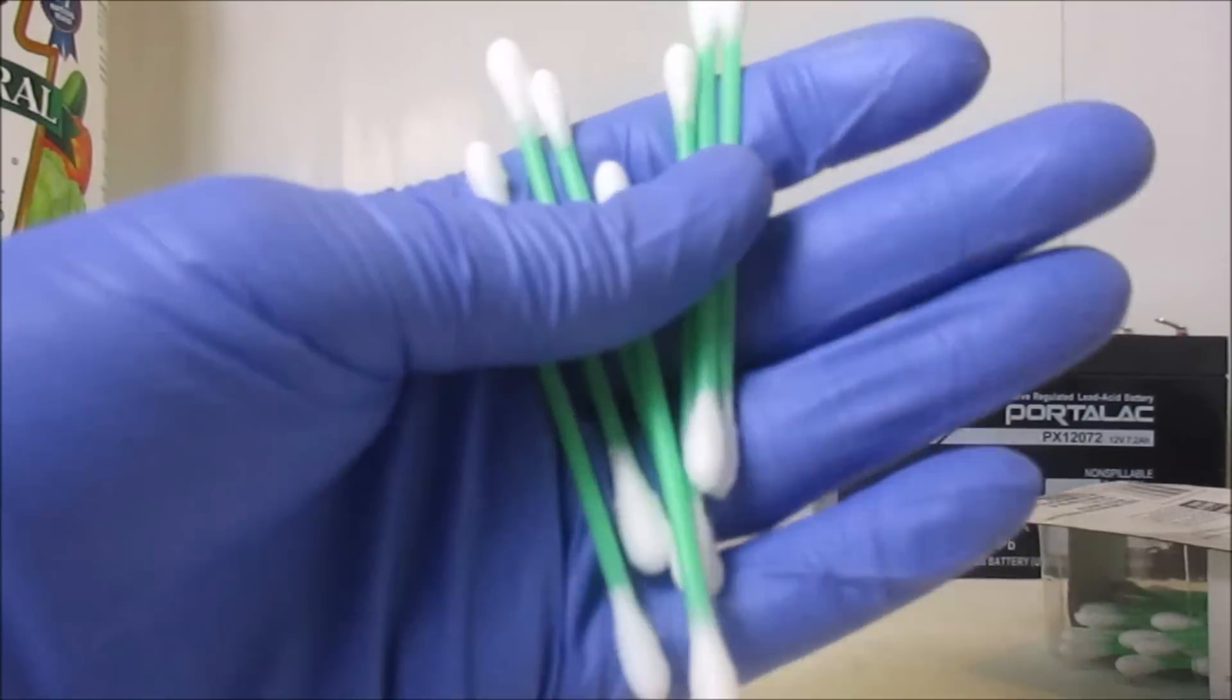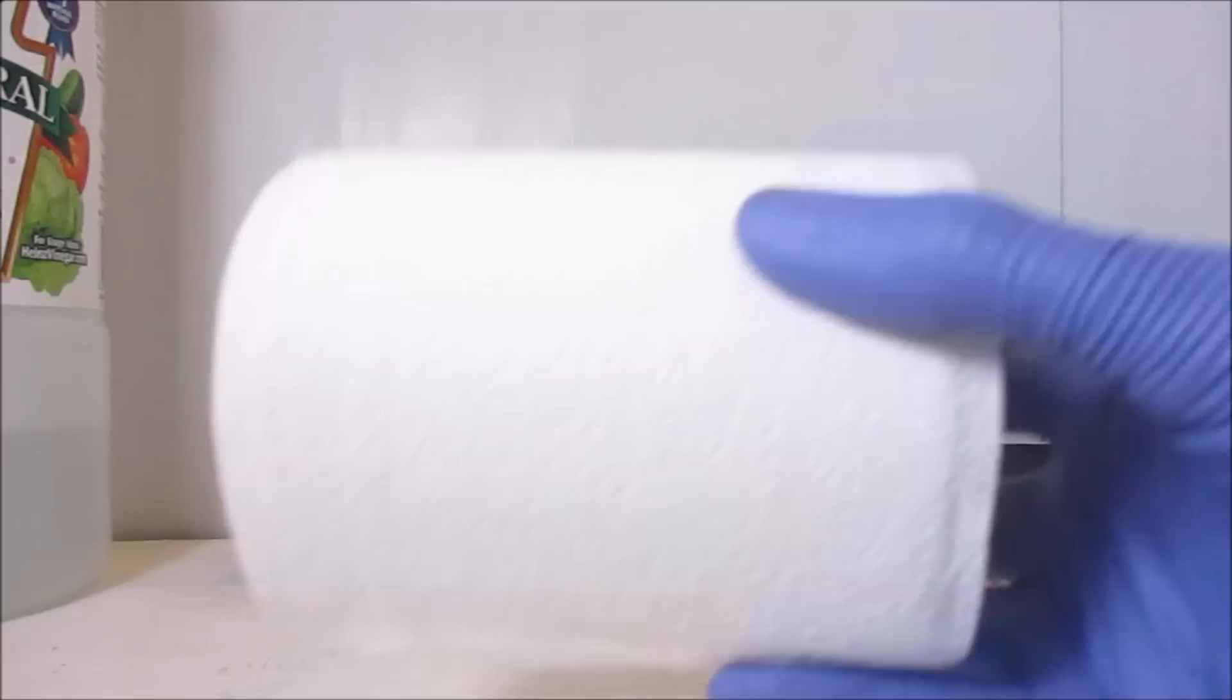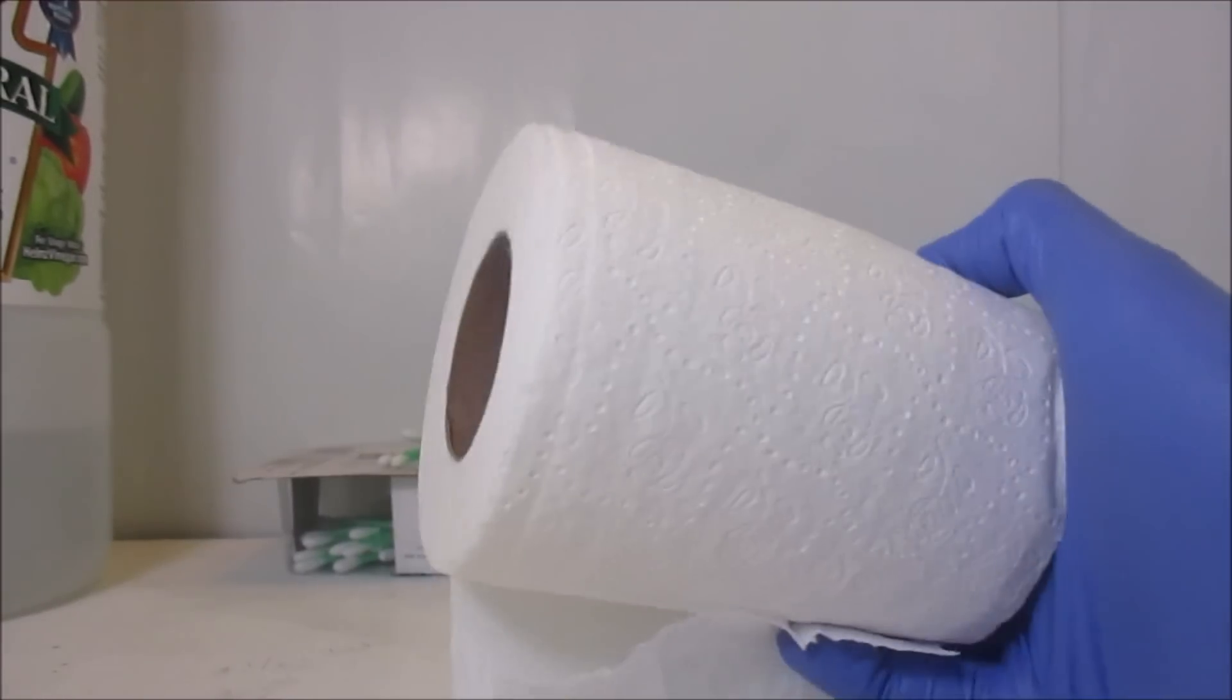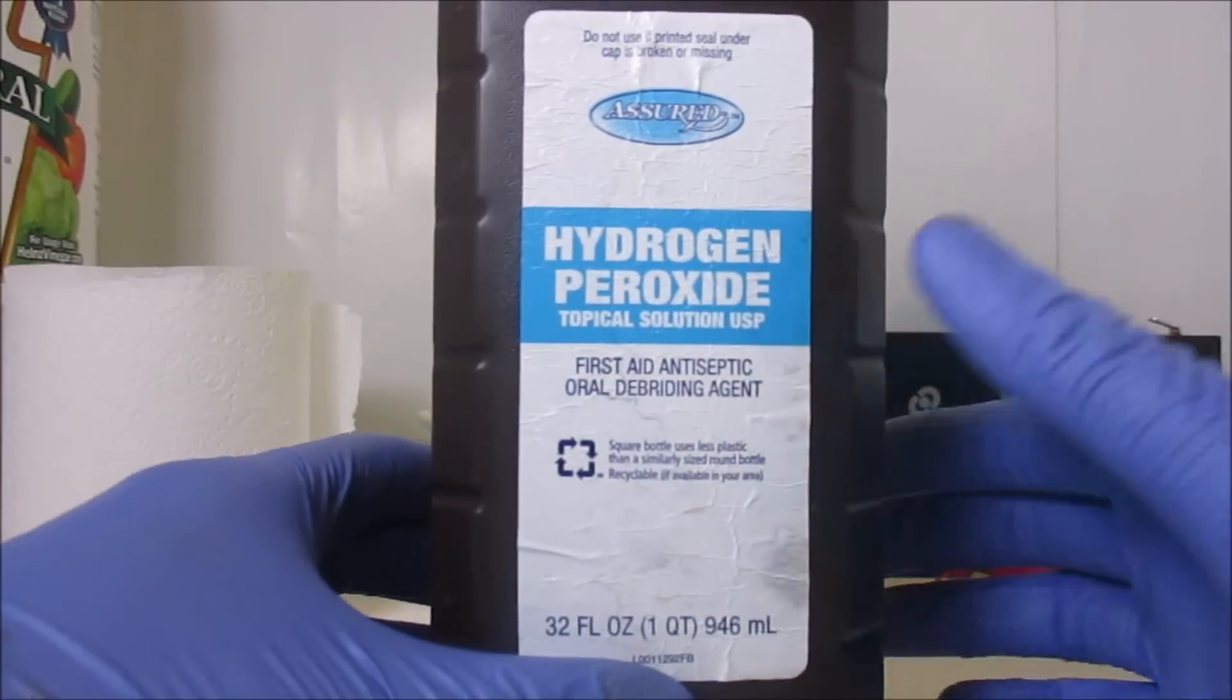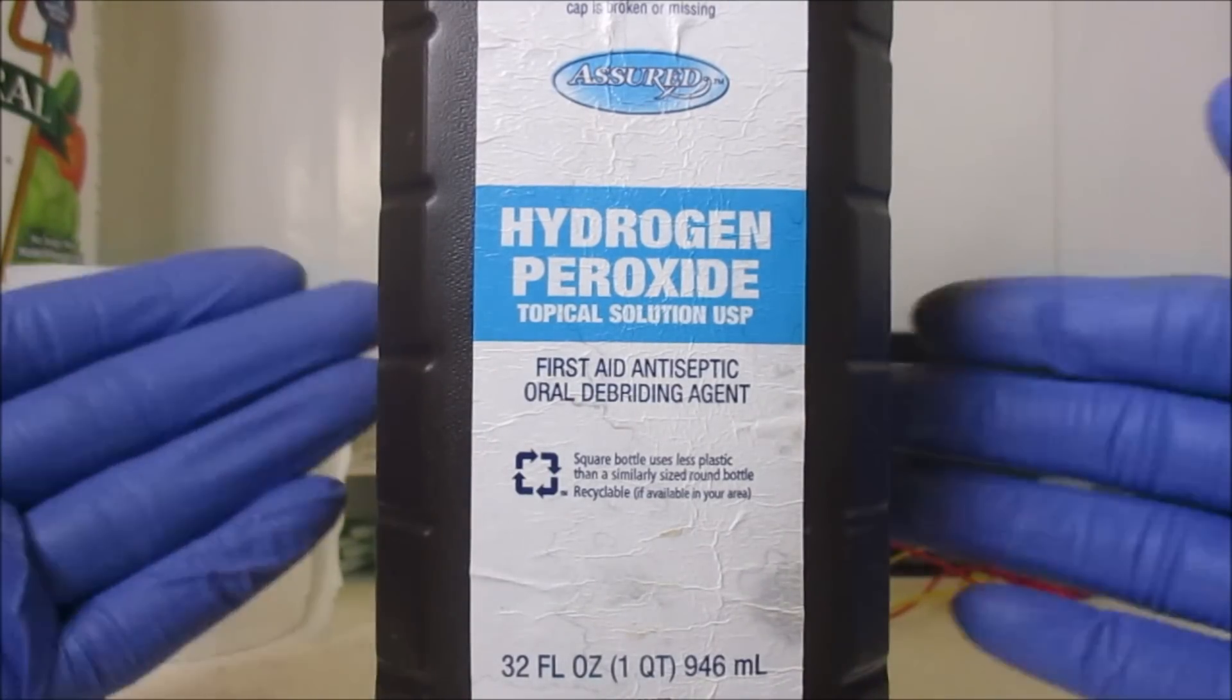Next, you are going to need a handful of cotton swabs. You're going to need two different alligator clips. Make sure you also have some tissue—in this case I'm using toilet paper. For this step I'm using hydrogen peroxide, but I recommend you use rubbing alcohol.